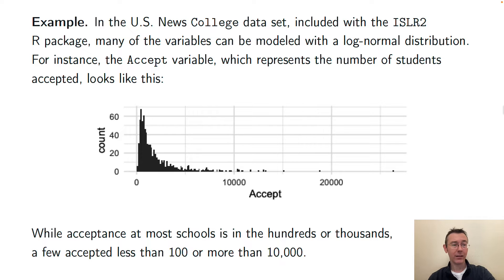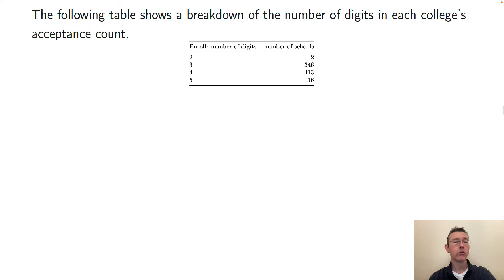You can see the normality that actually exists in this distribution most clearly if you just make a table with the number of digits that are actually in those acceptance numbers. And just looking at this you can already kind of see that bell shape. You see the symmetry and you also see the tails. You see that for schools with two or five digits in their enrollment totals there's only two and 16 respectively, while you've got similar counts for three and four similar to one another that are much larger.